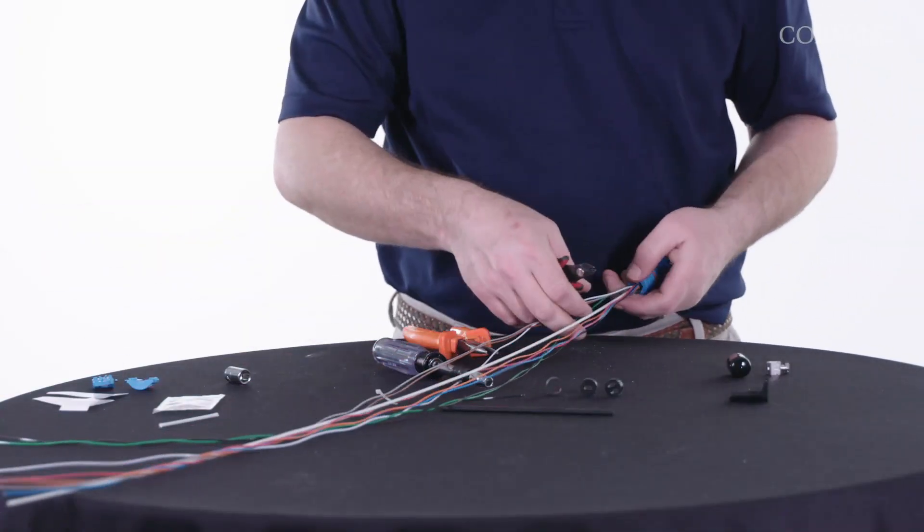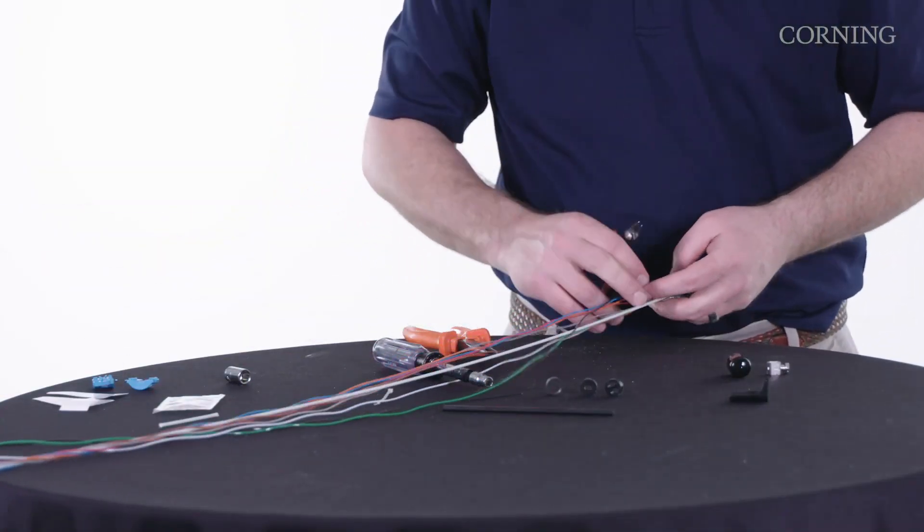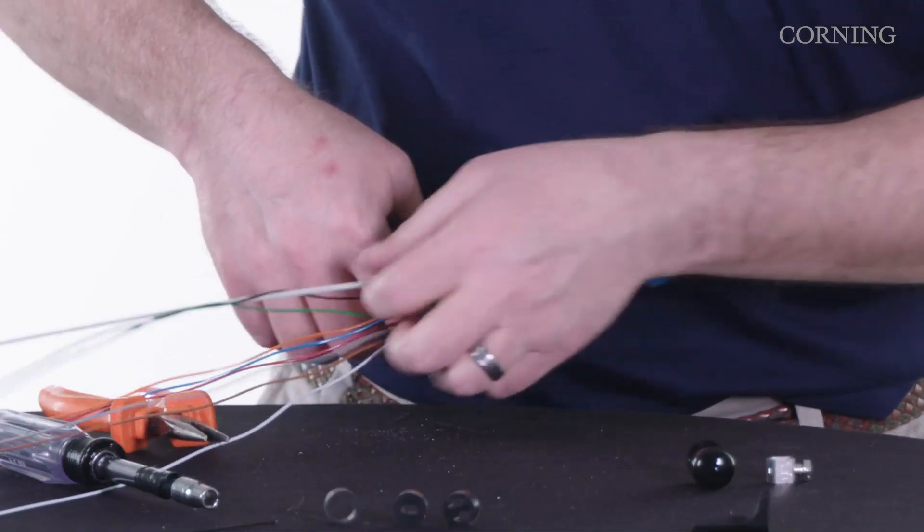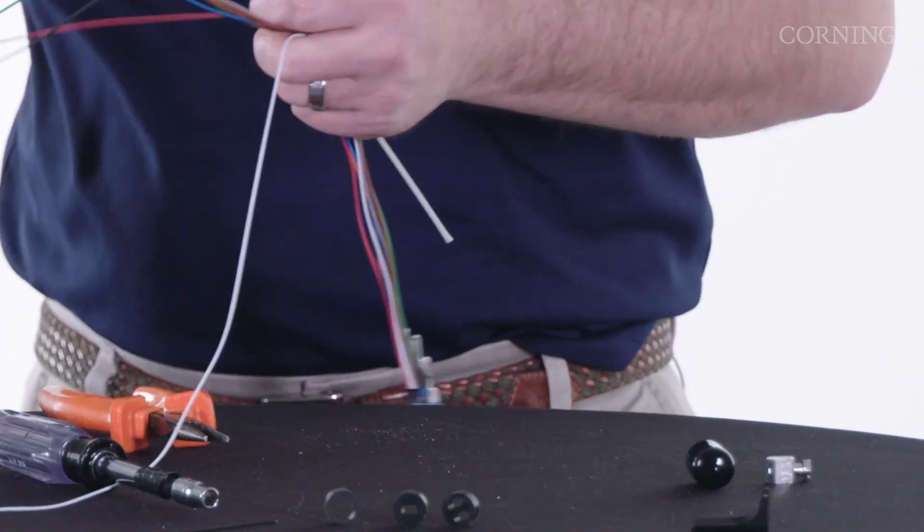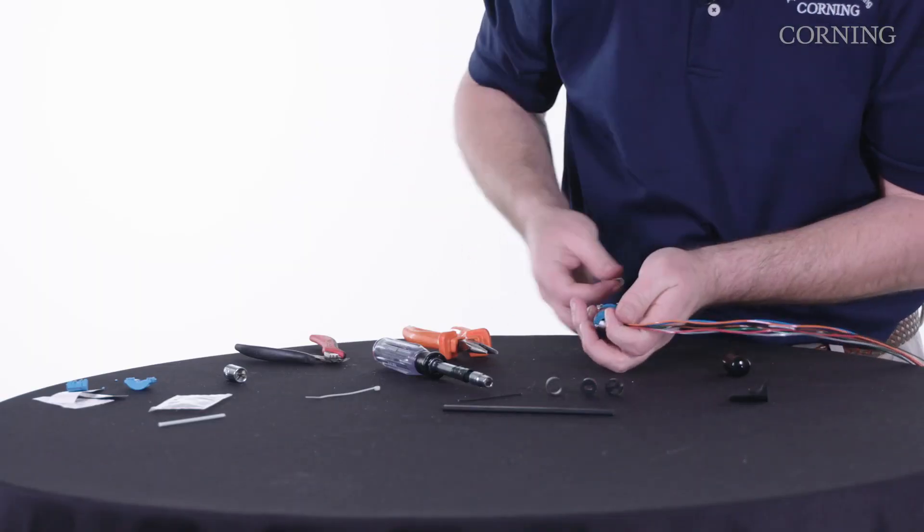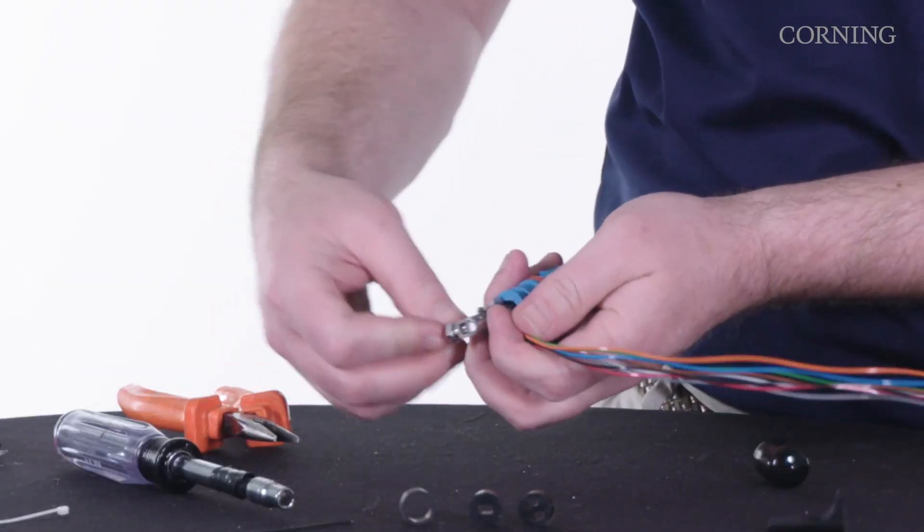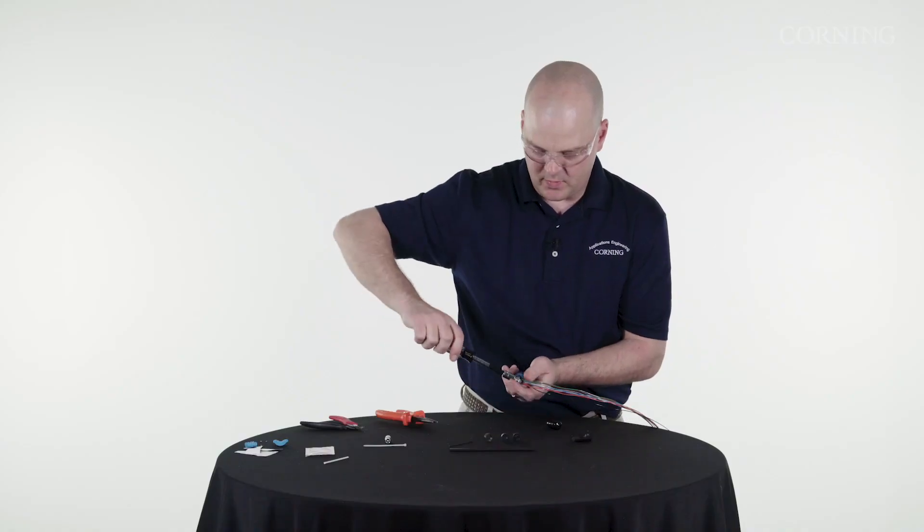Trim off that outer jacket. Take this central strength member, somewhere right around the end there. I'll take my doghouse, strain relief doghouse here, put it right over the top of that.